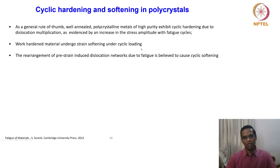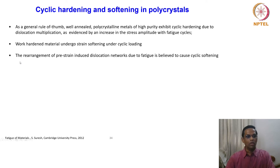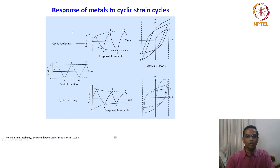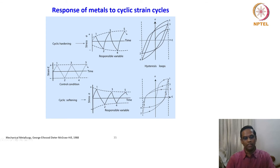The cyclically hardened material eventually softens as the number of cycles increases. The rearrangement of pre-strain-induced dislocation networks due to fatigue is believed to cause cyclic softening — similar to recovery effects. You can observe whether the material is undergoing cyclic hardening or softening just by looking at the stress-strain response during testing. In a strain-controlled test, you control the strain and observe the stress response.